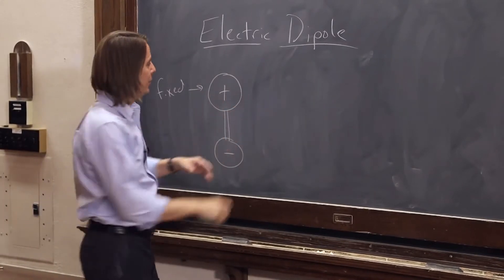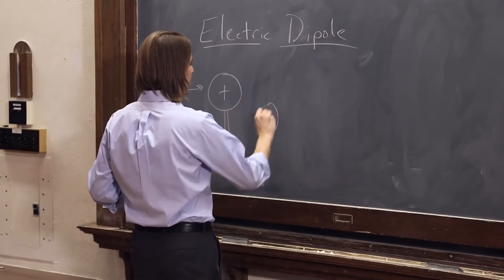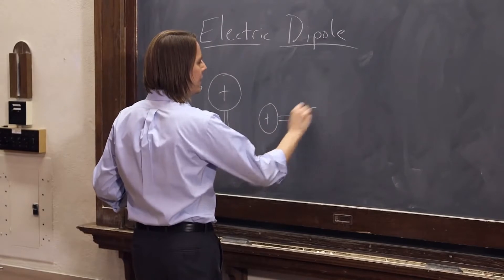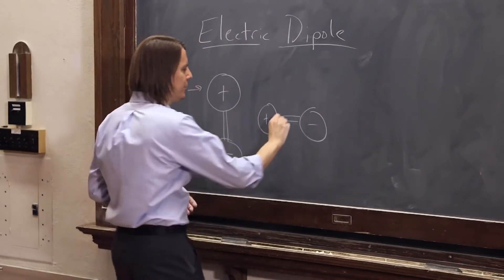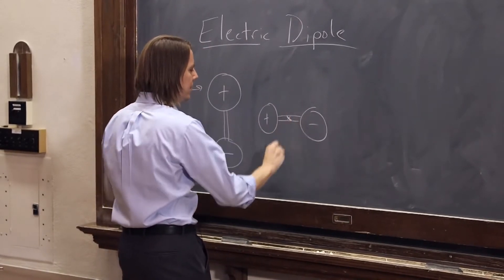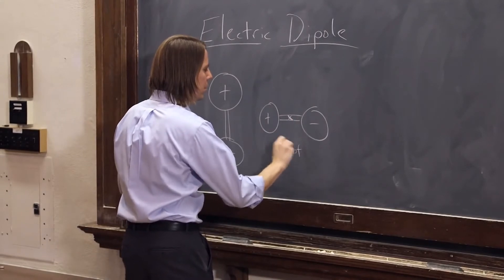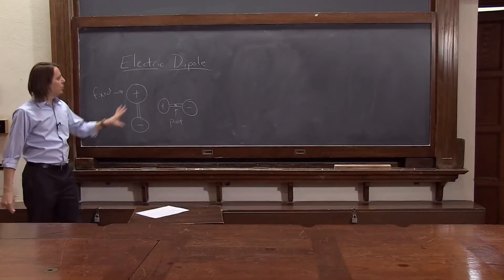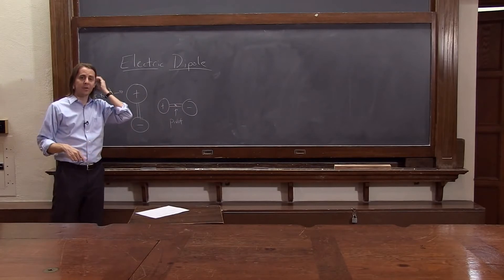Now let's have another dipole here. Let's let this one have its positive charge like that, and its negative charge like that, and let's put it on a pivot. So it can't translate, but it can spin, it can rotate.